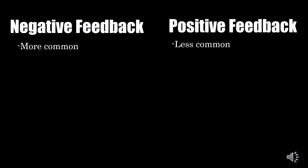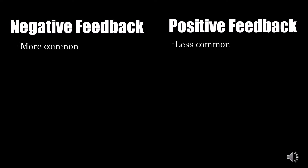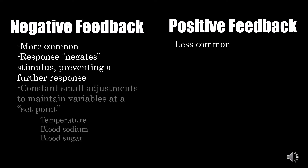Of the two, negative feedback is more common. The response eliminates the stimulus and prevents an even further response. This is how your body is constantly able to make small adjustments to keep all of your important variables — things like your temperature, your blood sodium, your blood sugar — within a specific range, keeping you alive.